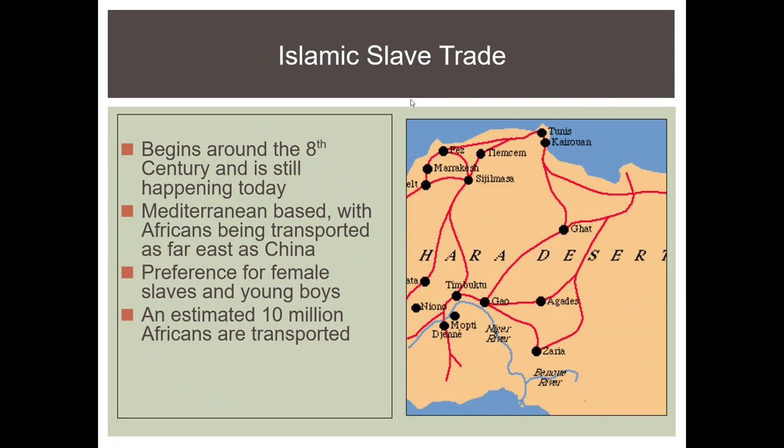Something not very well documented or talked about is the Islamic slave trade, which began in the 700s and continues in some cases to today. Slaves would be taken to the Mediterranean coast, loaded on ships, and taken east to places like India, China, Russia, and the Middle East. We don't actually know how many people were transported in the Islamic slave trade — estimates range from 10 to 15 million, and the low-end estimate is around 10 million.